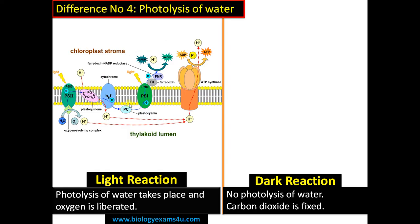On this thylakoid membrane, photosystems and other electron carriers are located. This is photosystem 2 and this is photosystem 1. Once the electron is released from photosystem 2, there is an electron hole that should be refilled or replenished. It is refilled by photolysis of water, where water splits up forming oxygen, protons, and electrons. These electrons feed into photosystem 2 and further carry out the reaction, and that is the oxygen evolved during photosynthesis.